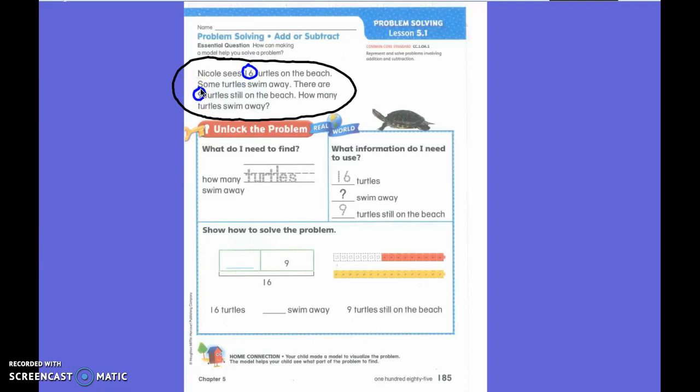What else is very important that we need to look at? Some. You are exactly right. Some. Because she saw sixteen but we don't know how many swim away. But she does know that nine were still on the beach.